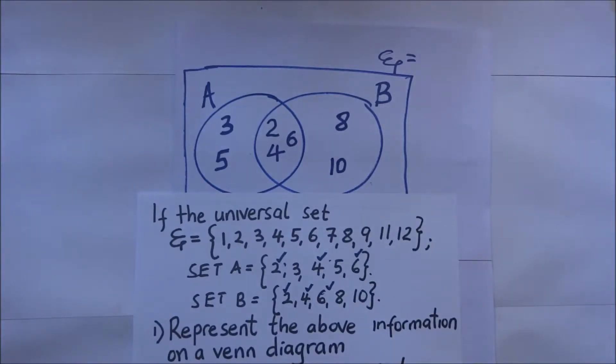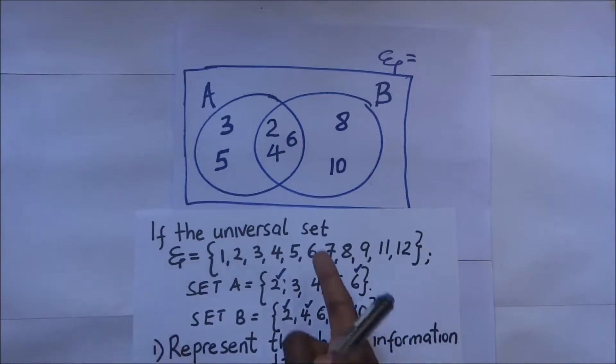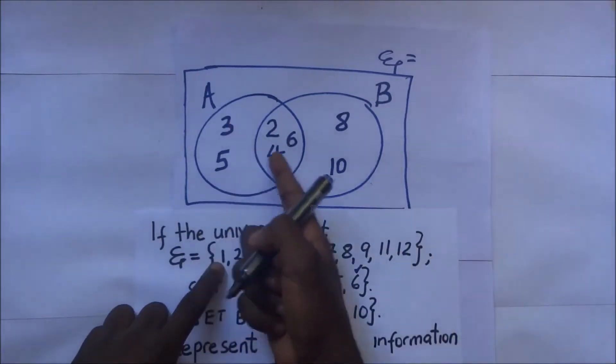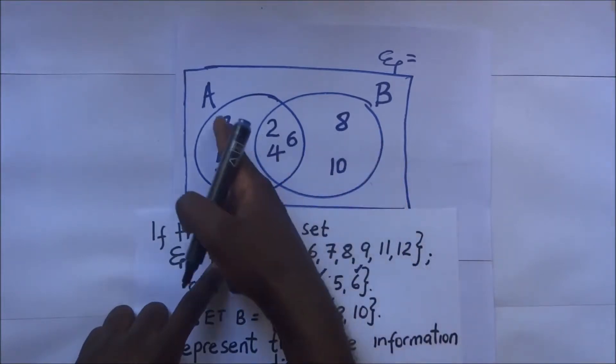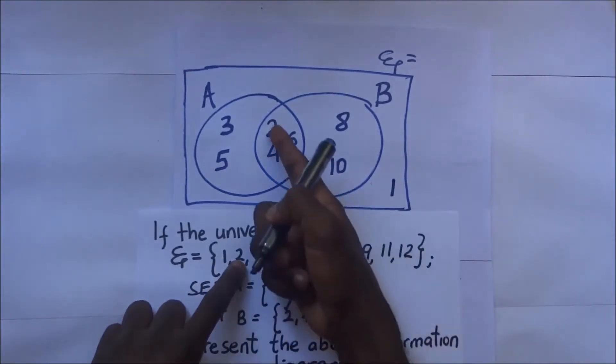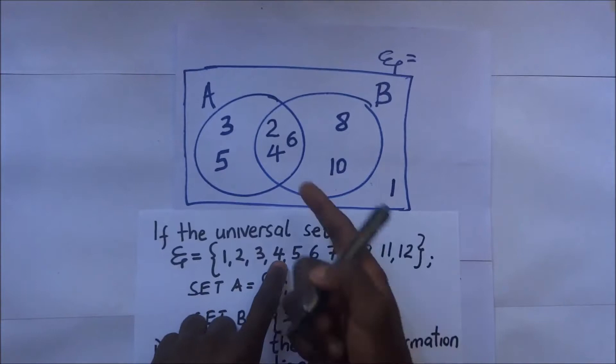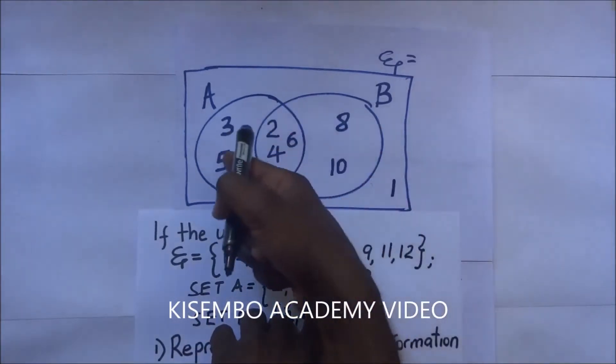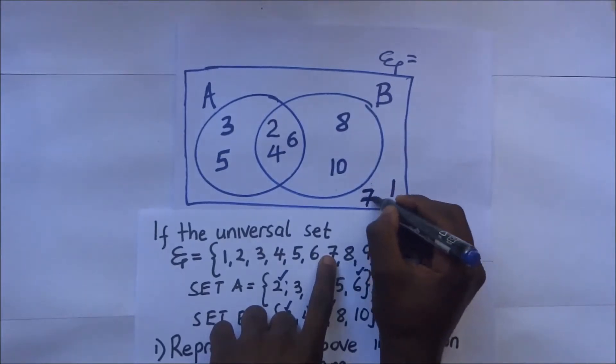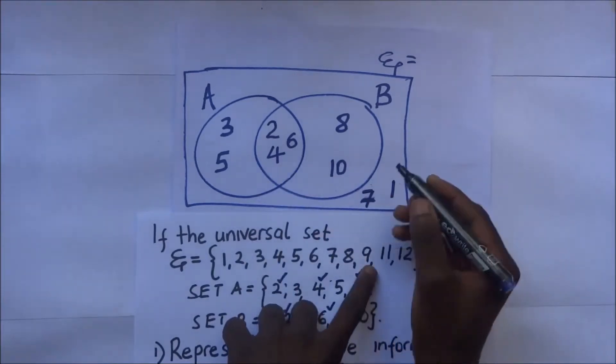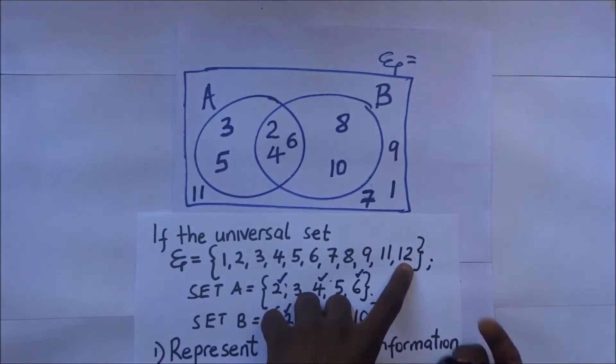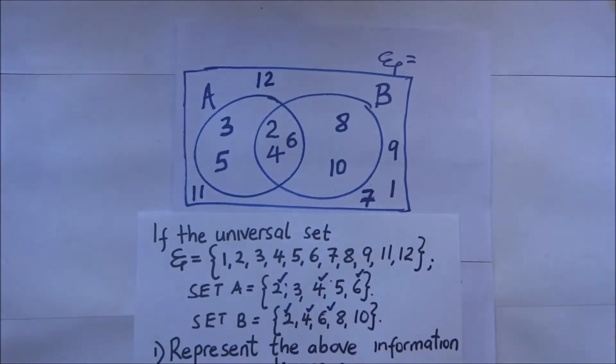There we have represented that information in a Venn diagram. But now we do not know if all members have been included. So we check with our universal set. Checking with our universal set, we do not have 1 in any of these, so 1 is not in A, not in B, so it is outside. 2 is there, 3 is there, 4 is there, 5 is there, 6 is there. 7 is not represented anywhere, so we put it outside. 8 is there, 9 is not anywhere, so it is also out. 11 and 12 are also not anywhere, so we put them out. There we have fully represented our information.